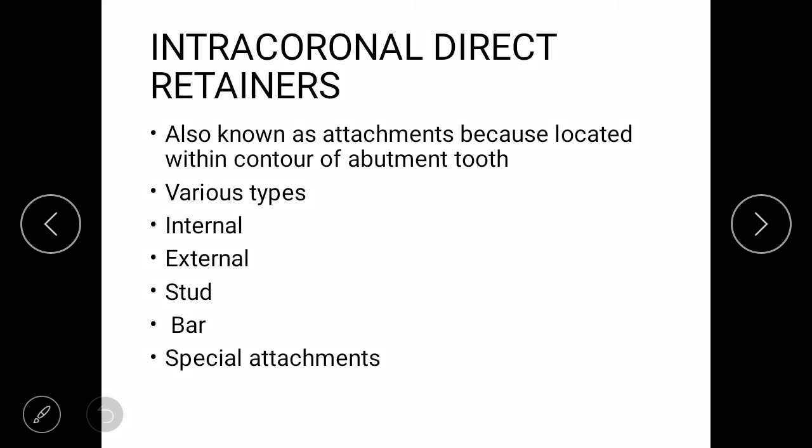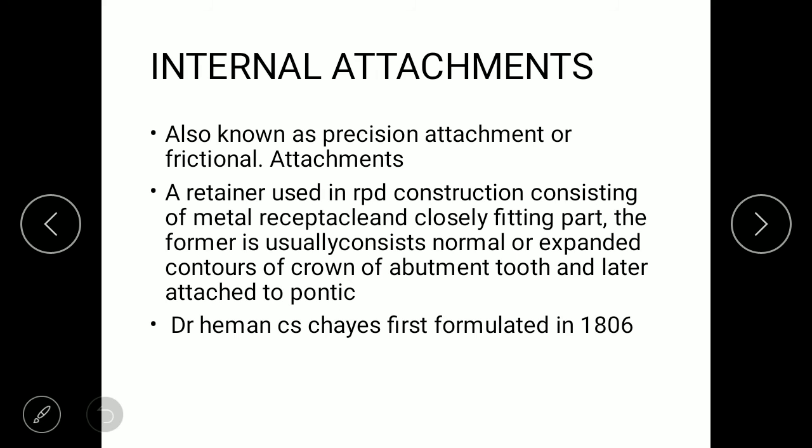Intracoronal direct retainers are also known as attachments because they are always located within the contour of the abutment tooth. Types include internal, external, stud, bar, and special attachments. The internal attachment is also known as a precision attachment or frictional attachment. It is a retainer used in RPD consisting of a metal receptacle and a closely fitting part.